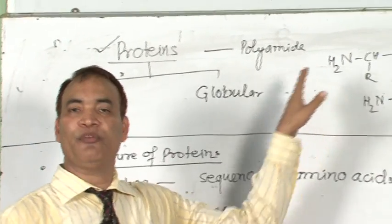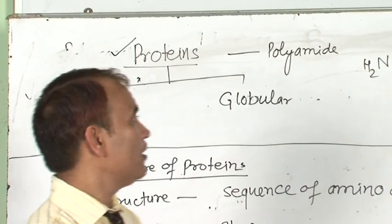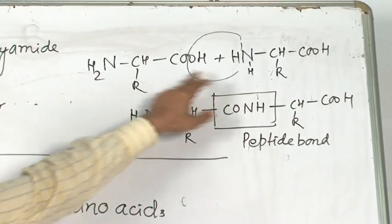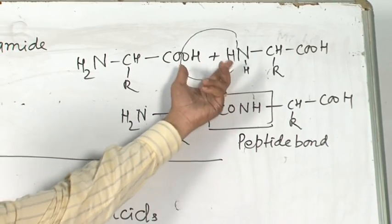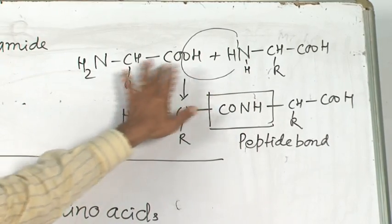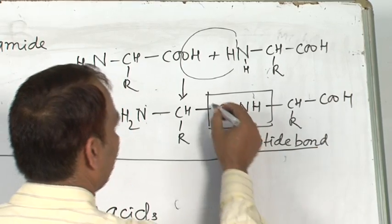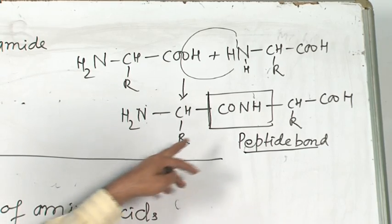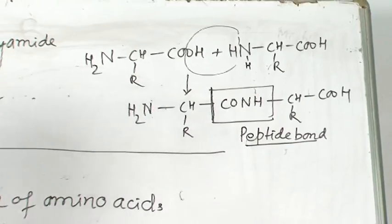Proteins are chemically a polyamide — a polymer of amino acids. A simple example is a dipeptide, where two amino acids are joined together. The amino acids are joined through their functional groups — the carboxylic group and the amino group. The bond formed between two amino acids is known as a peptide bond, that is C–O–N–H. This linkage is called the peptide bond.